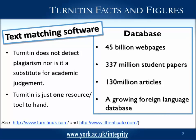Sometimes people call it plagiarism detection software, and that can be quite misleading. I would say that you are the plagiarism detection software, because of the academic judgment that comes into deciding whether something's been plagiarised or not. Turnitin is an electronic submission platform, as James has rightly said. It has a number of features. We just use the text-matching software here at York — the originality check. There is also GradeMark and PeerMark, but we don't use them here. It's text-matching software, and it helps you to see where the text matches, and then you can decide if it's plagiarism. So it's no substitute for your academic judgment.